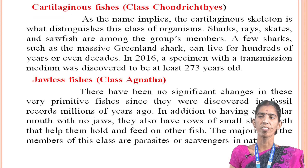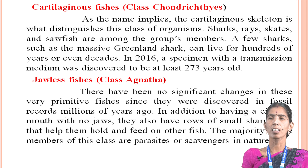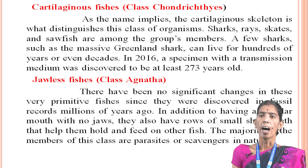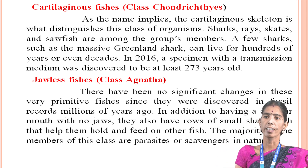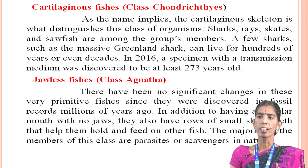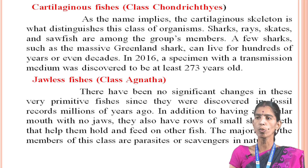Then cartilaginous fishes. As the name implies, the cartilaginous skeleton is what distinguishes this class of organisms. Sharks, rays, and chimaeras are among the members of this group. A few sharks such as the massive Greenland shark can live for hundreds of years or even longer. In 2016, a specimen with a transmission medium was discovered to be at least 273 years old.